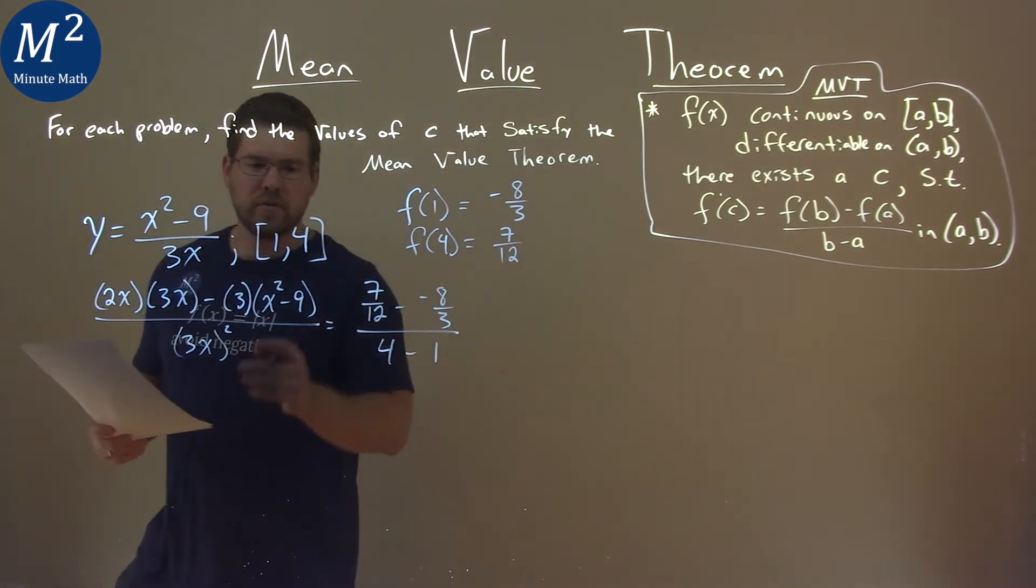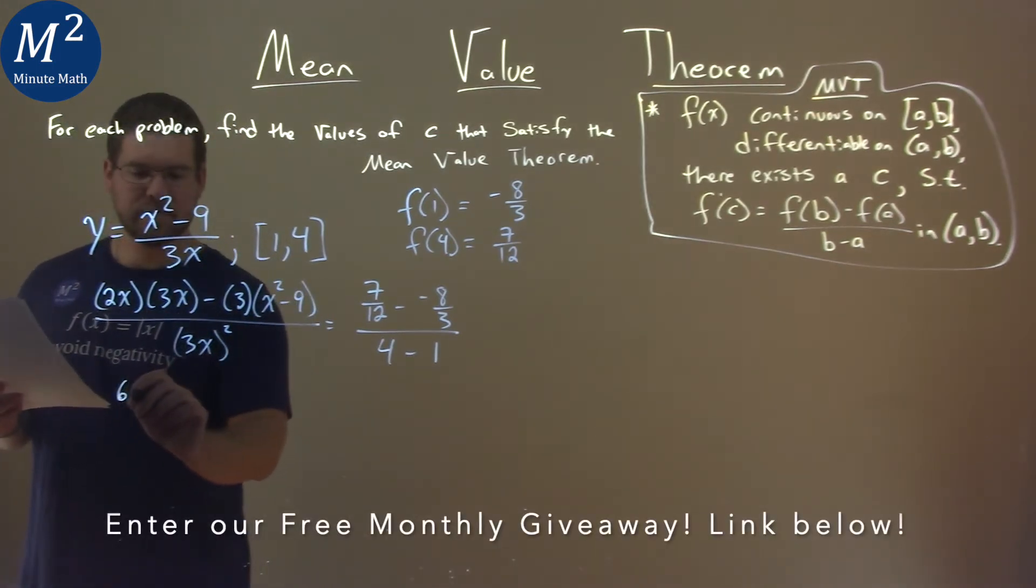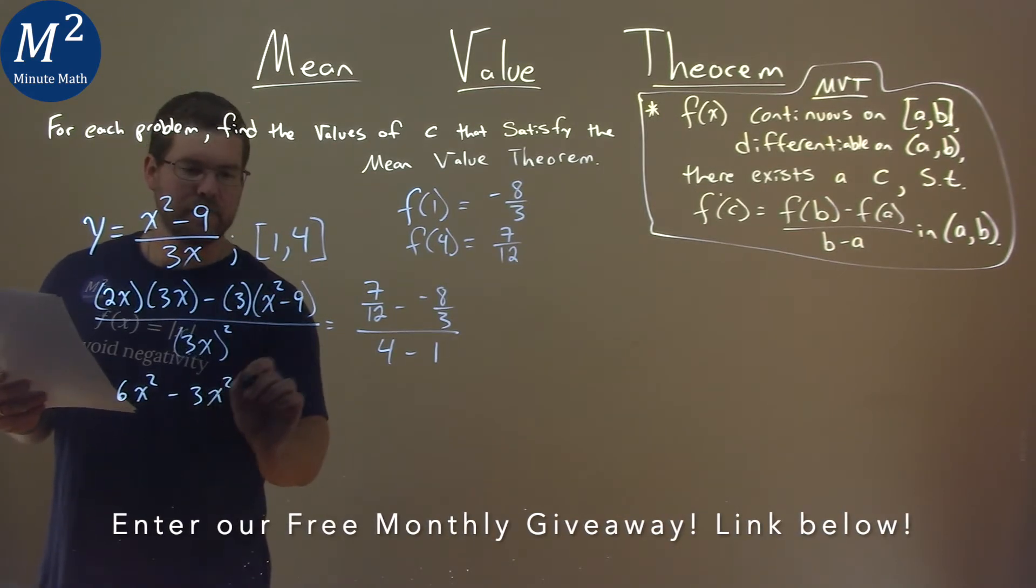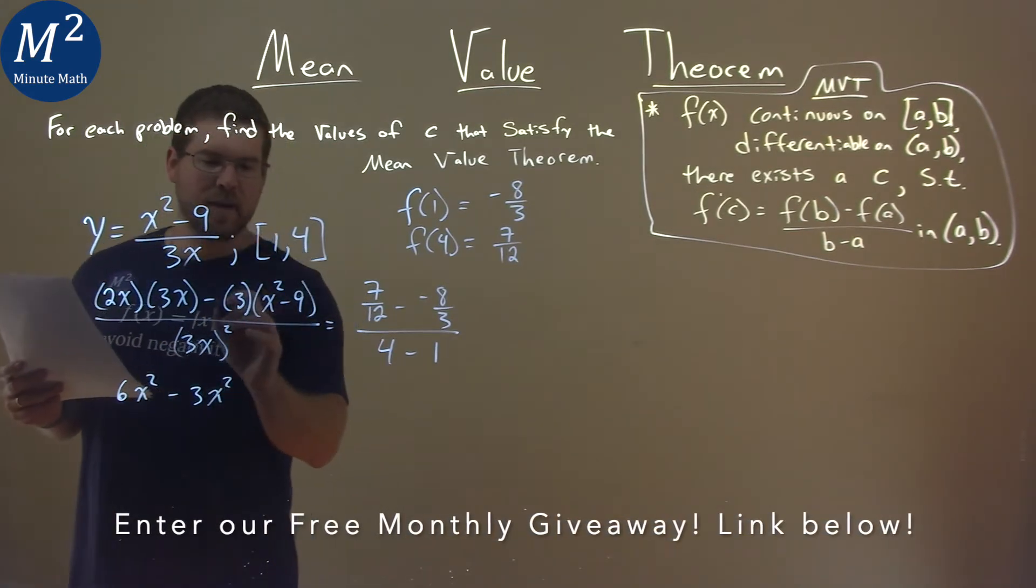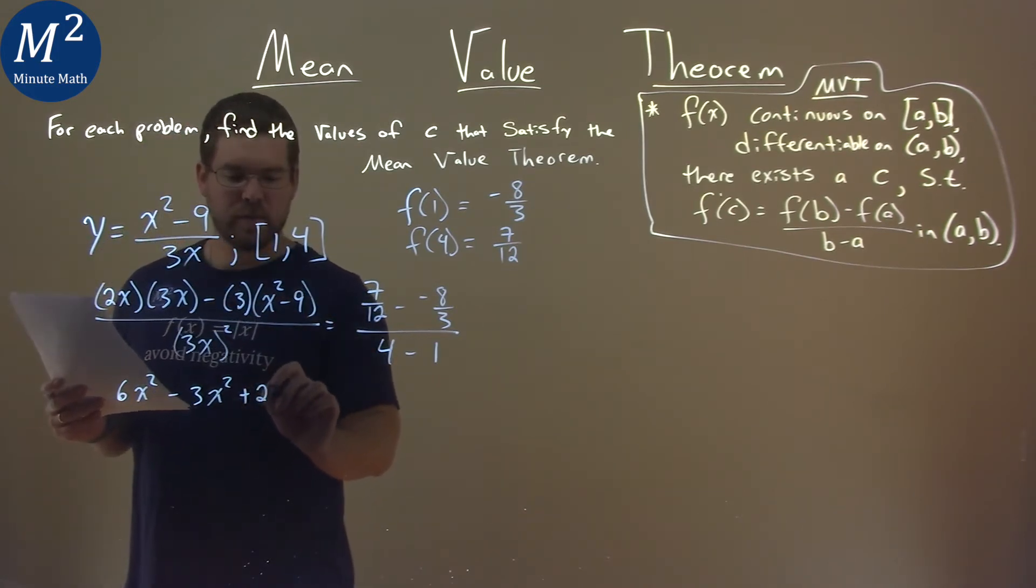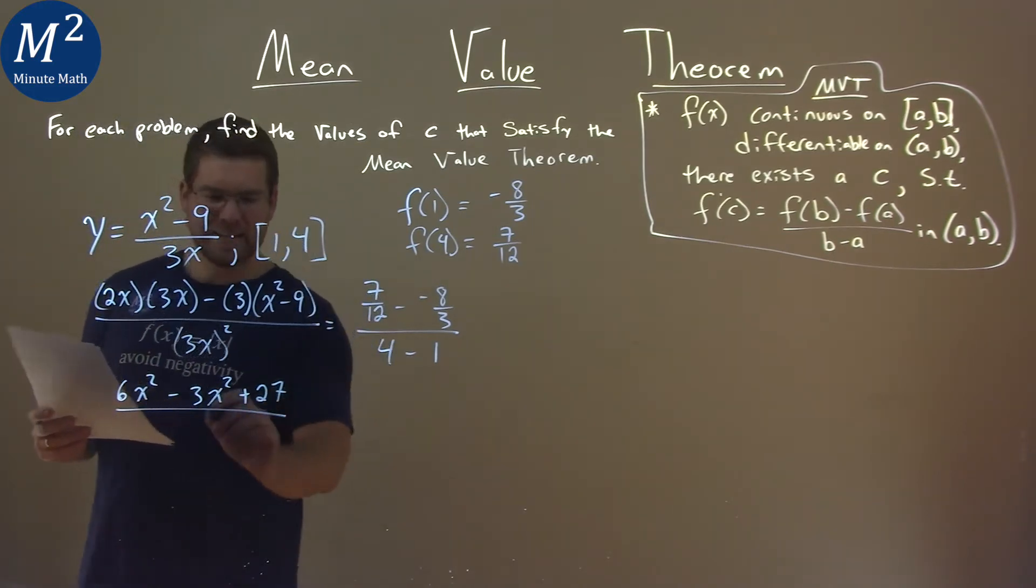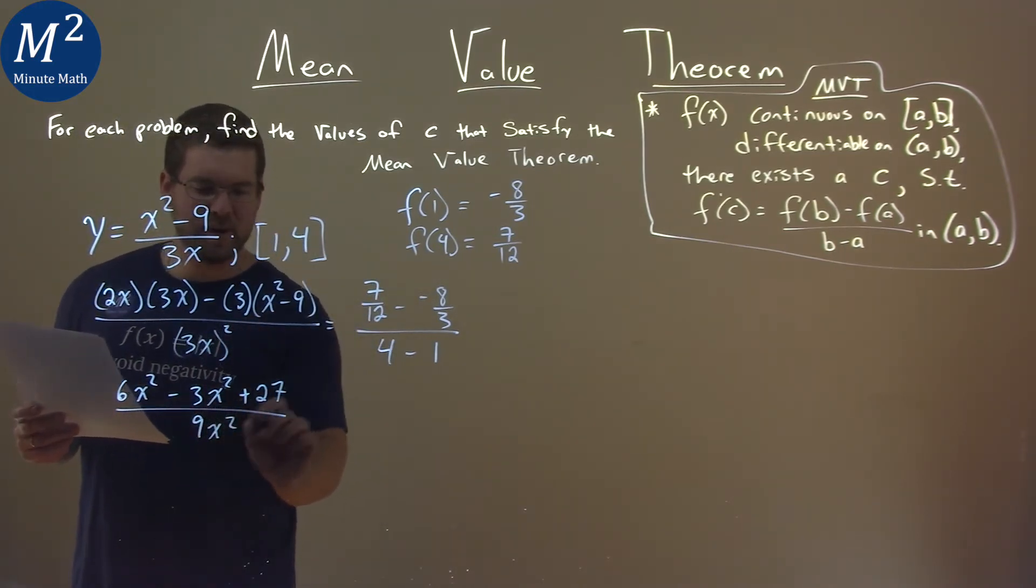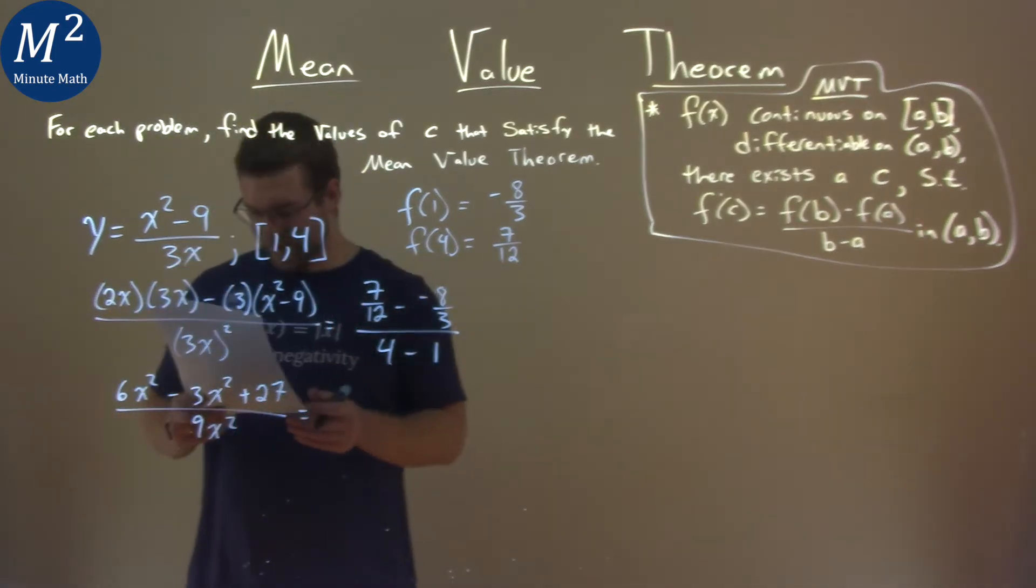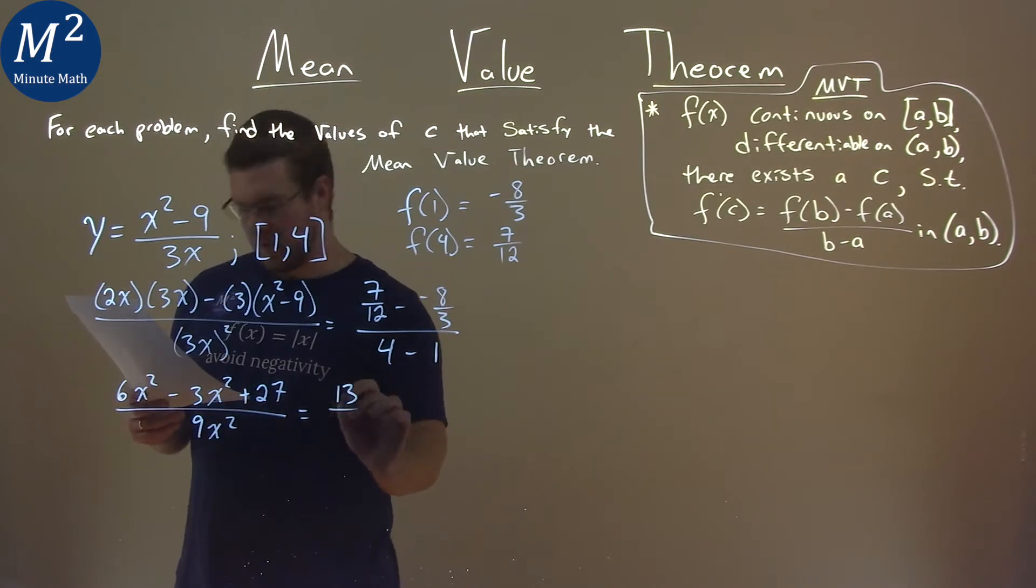Alright, so now let's go simplify where we can. 2x times 3x is 6x squared, minus 3 times x squared is 3x squared, but keep the minus sign going, minus 3 times negative 9 is positive 27. All over denominator, 3x all squared is 9x squared. What is that equal to? Well, I simplified all this for you, practice your fractions if you need it, and that's 13 over 12.